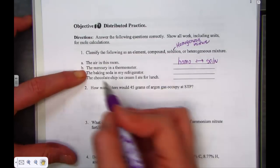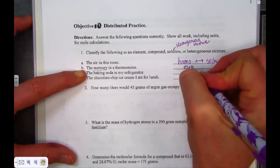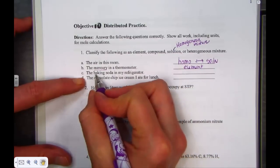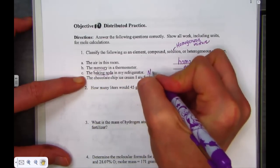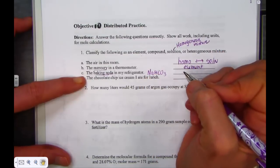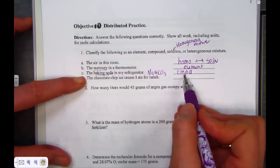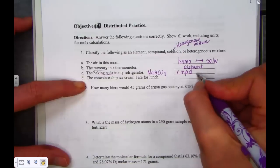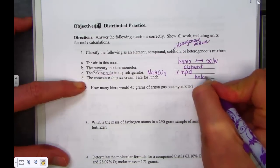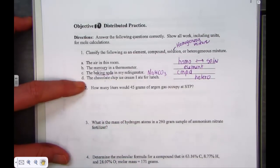Letter B. The mercury in a thermometer. Mercury has a symbol. Mercury is an element. It's number 80. It is an element. Baking soda. In my refrigerator, baking soda is a common name for sodium hydrogen carbonate. Baking soda is sodium bicarbonate. We use that in the lab when we have an acid spill. Compounds have chemical formulas. Sodium bicarbonate is a compound. And the last choice here, chocolate chip cookie, chocolate chip ice cream I ate for lunch, I wish. I see many things distributed throughout. That's a heterogeneous mixture. I can see the individual chocolate chips distributed throughout the ice cream. Hetero.